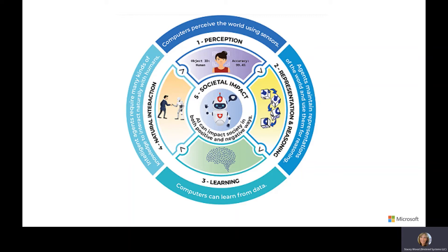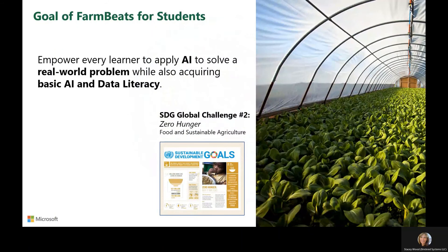And you can see their five big ideas here: perception, representation and reasoning, learning, natural interaction, and societal impact. These are the concepts that we're basing FarmBeats for Students kits on. The goal of FarmBeats for Students is to empower every learner to apply AI to solve a real-world problem while also acquiring basic AI and data literacy.